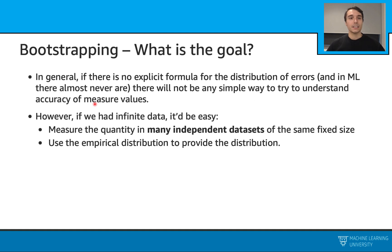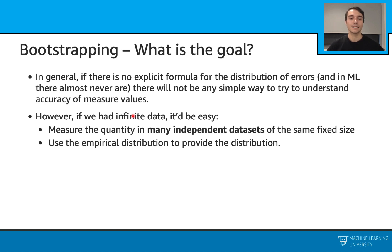In general, if there is no explicit formula for the distribution of errors — and in machine learning there almost never are — there will not be any simple way to understand the accuracy of these measures. However, if we had an infinite amount of data, we could apply some of these techniques. For example, we could measure the quantity in many independent datasets of the same fixed size, and then use an empirical distribution to provide the overall distribution.